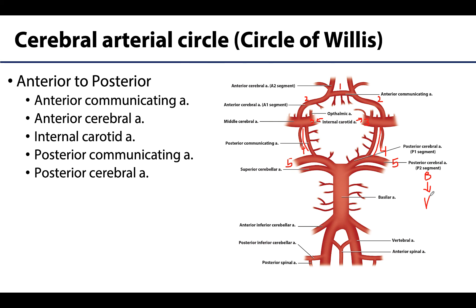It is important to note that the circle of Willis may not look like a perfect circle in all individuals. Some people do not have all of these anastomoses; occasionally they have more, and people may be missing a communicating branch. Think through the implications of lacking an anastomotic branch — for example, if you didn't have a posterior communicating artery on one side, what could happen? Nothing may occur if there is no occlusion, but if there is an occlusion, what are the implications?